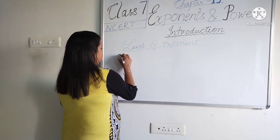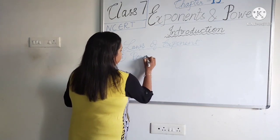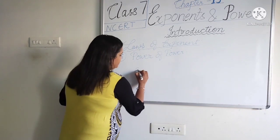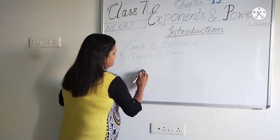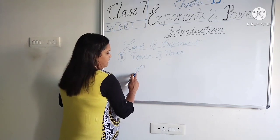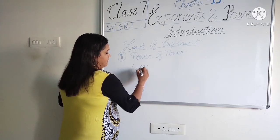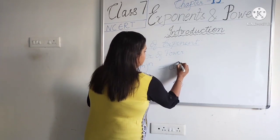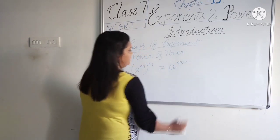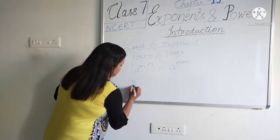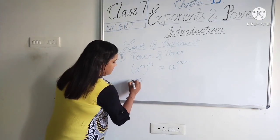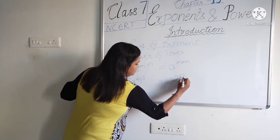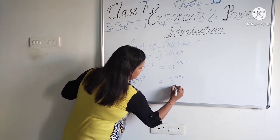The next law is the power of a power. If a is raised to the power m, and that result is then raised to another power n, we simply multiply the two exponents: (a^m)^n = a^(m×n). For example, 3 raised to the power 4, raised to the power 2, equals 3 raised to the power 4 × 2, which is 3 raised to the power 8.